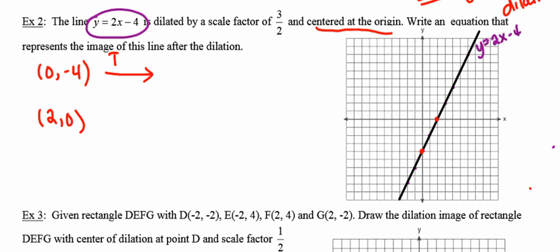And after a dilation with the center at the origin and a scale factor of 3/2, I need to figure out where that point is going to go. Well, the rule that we learned in the first example says simply multiply each coordinate by the scale factor. In this case, 3/2.